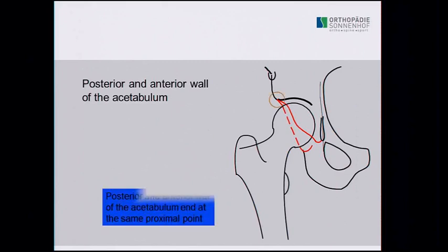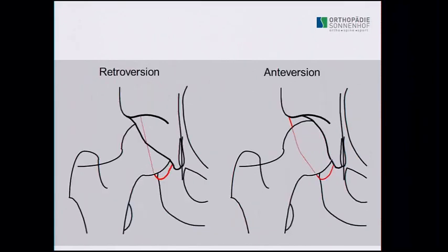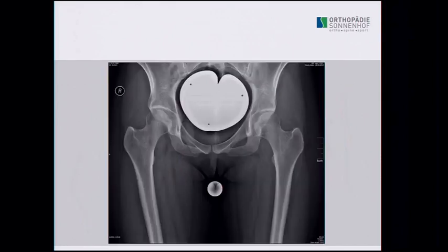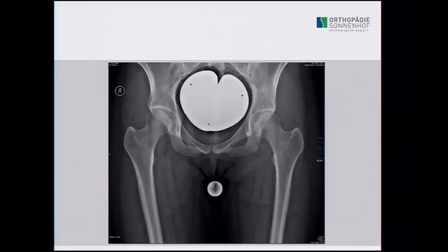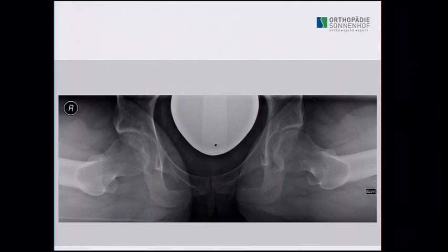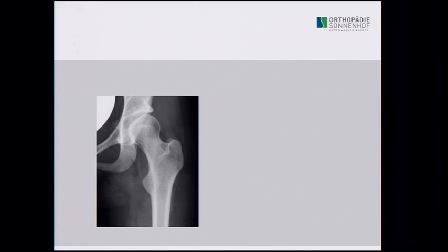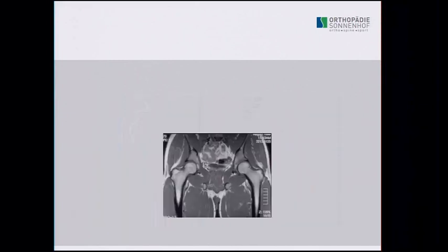Orientation of the acetabulum is very important. We can have retroversion or anteversion, but retroversion does not mean the patient's problem is only on the acetabular side. We must also look at the femoral side. For example, one patient with a crossing sign had a posterior superior impingement caused by the femur with high antitorsion. Sometimes dysplasia is present on the femoral side with minimal acetabular involvement.